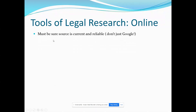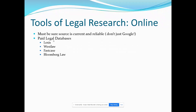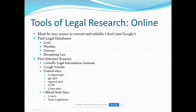When researching online, you have to make sure the source is current and reliable. You can't just Google a legal question — that's insufficient because you don't know where you're getting it from or how accurate and current it is. We also have paid legal databases like Lexis, Westlaw, Fastcase, and Bloomberg Law. We have free internet sources like Cornell's Legal Information Institute, Google Scholar — there's a video in your homework on how to use Google Scholar — as well as official federal and state sites.